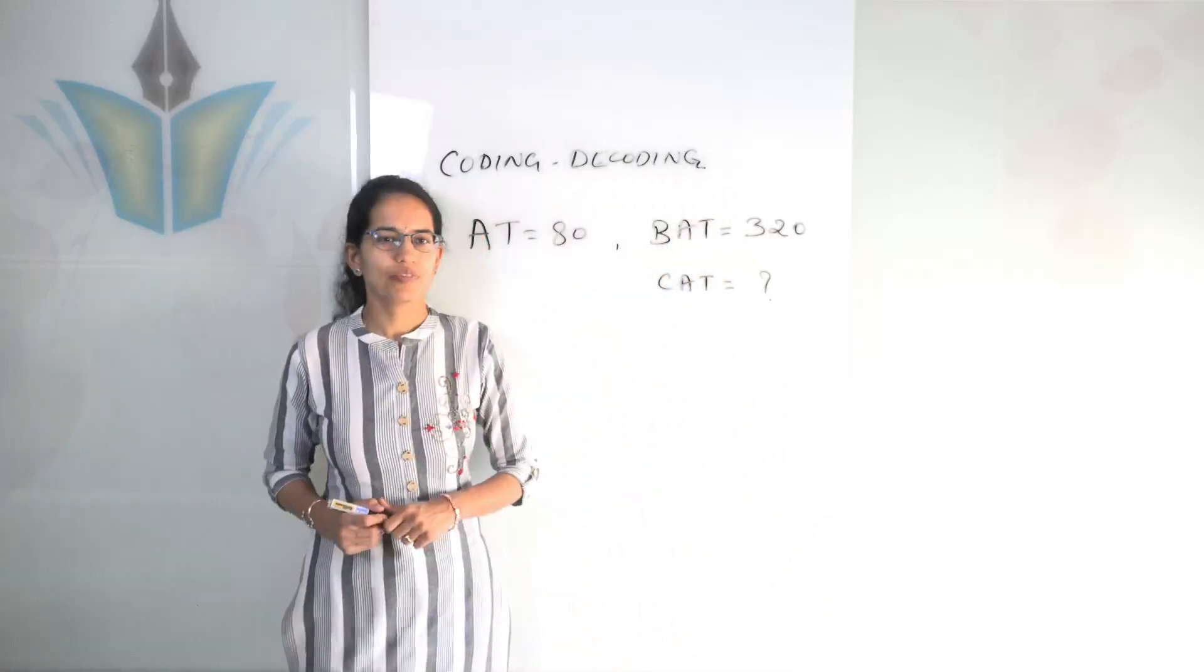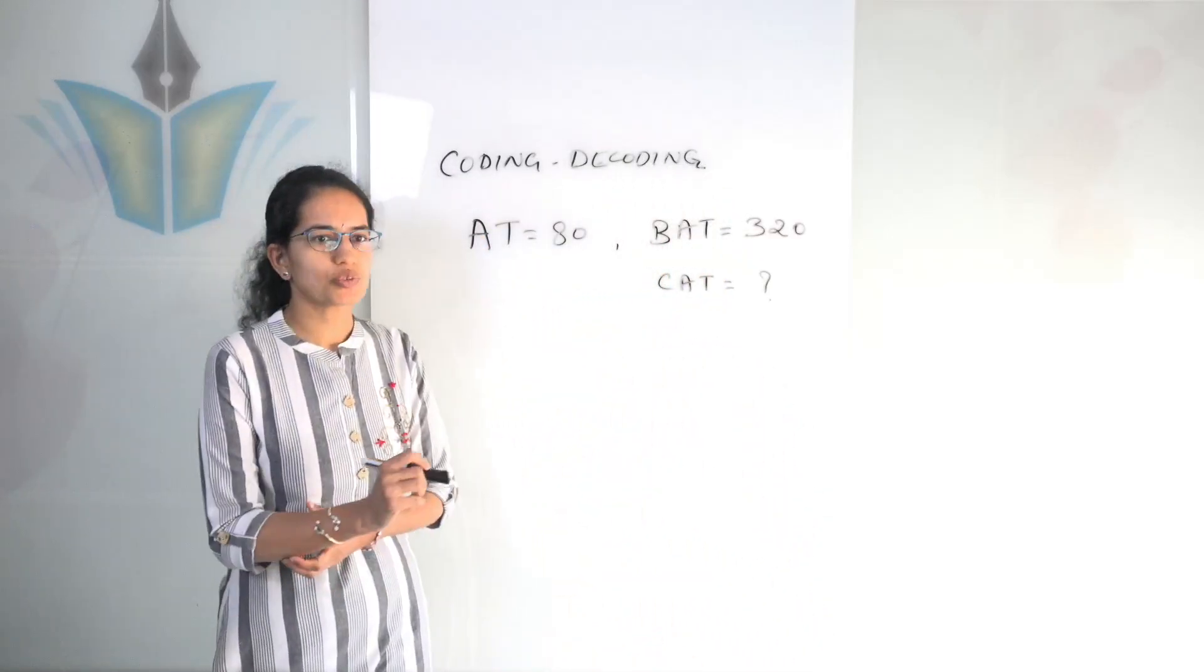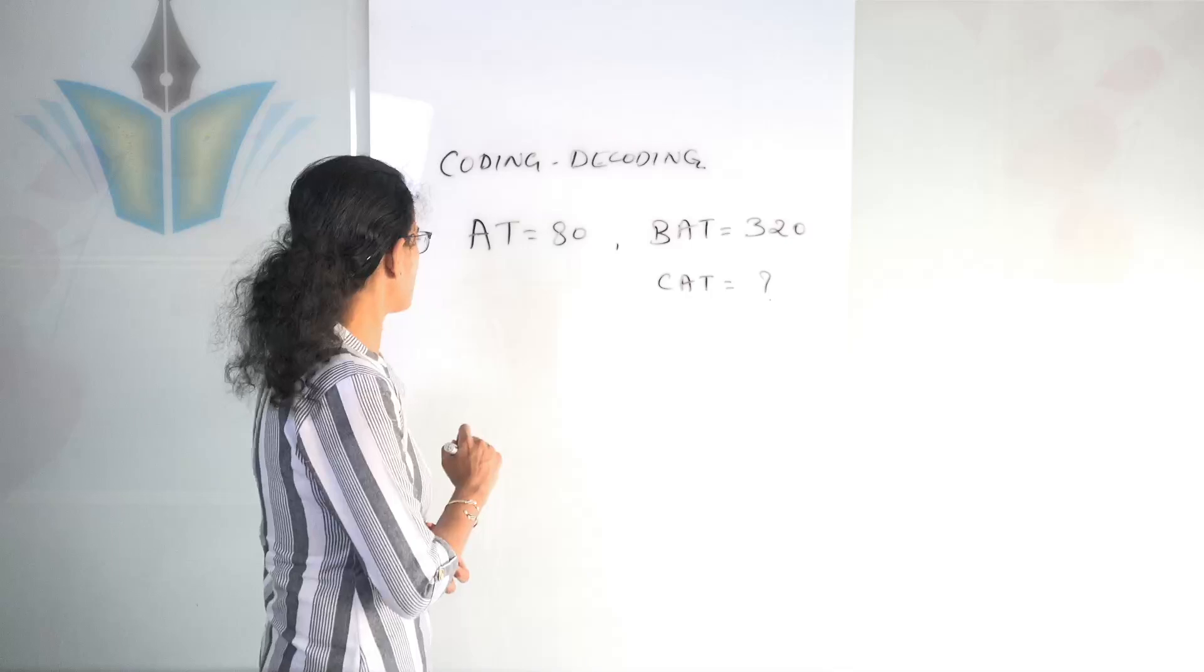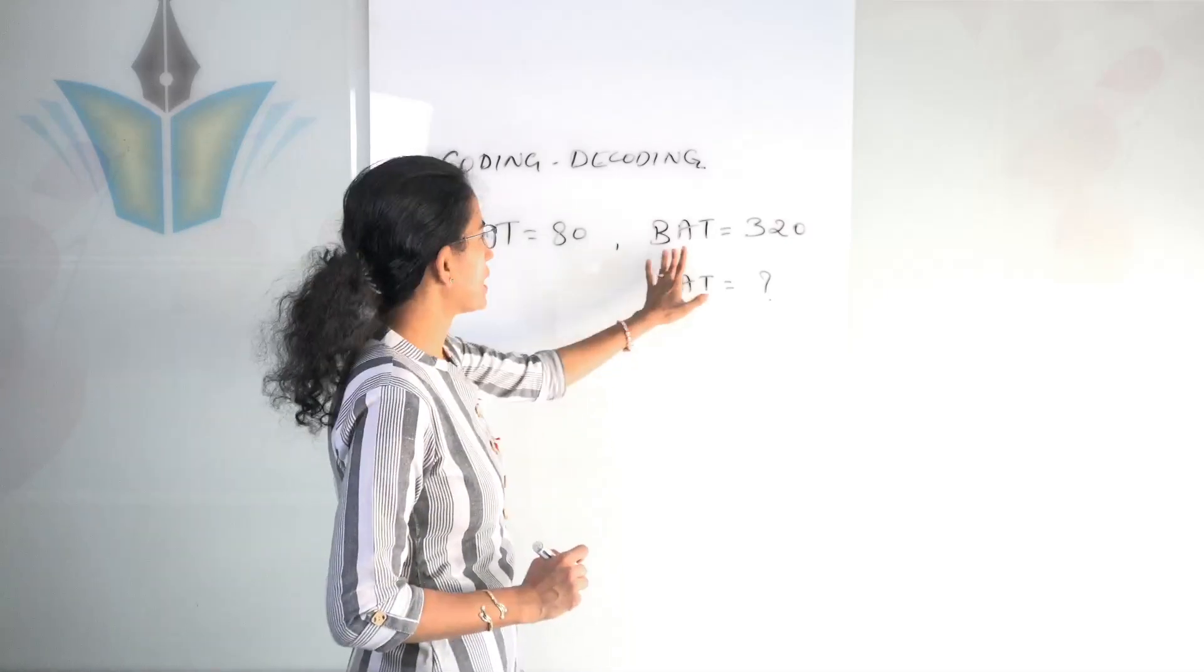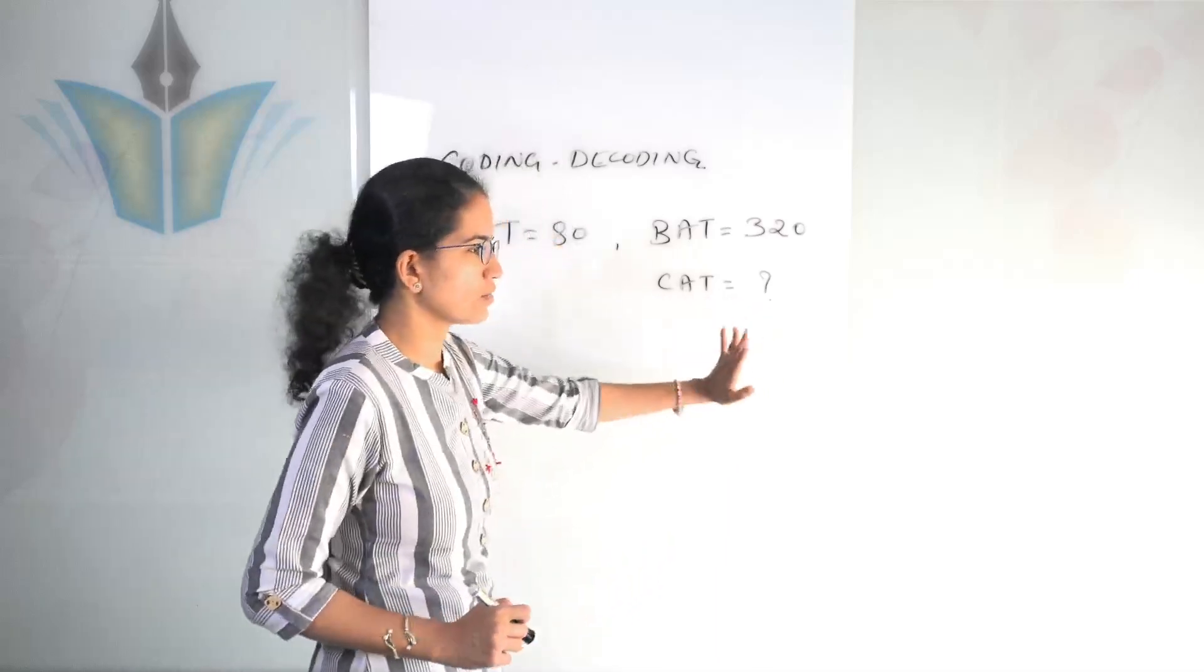Welcome. In this section we would solve a coding decoding problem. So one of the problems given here is AT is given as 80, PAT is given as 320, what would be CAT equal to?